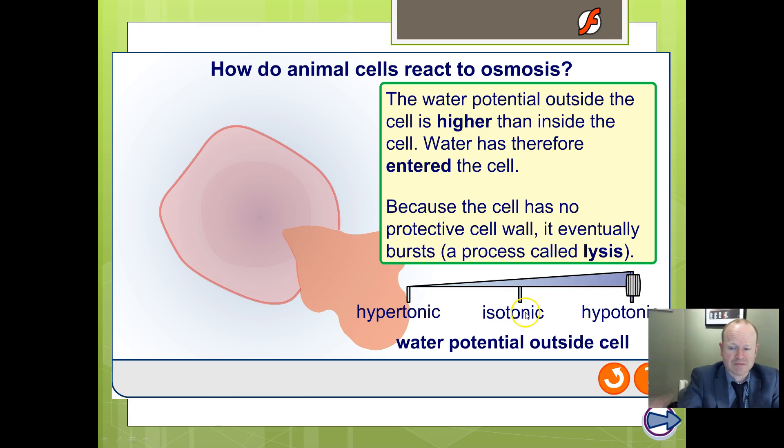So isotonic - same water potential. Hypertonic around the outside means more salty and less water. Whereas hypotonic - more watery, less salt.